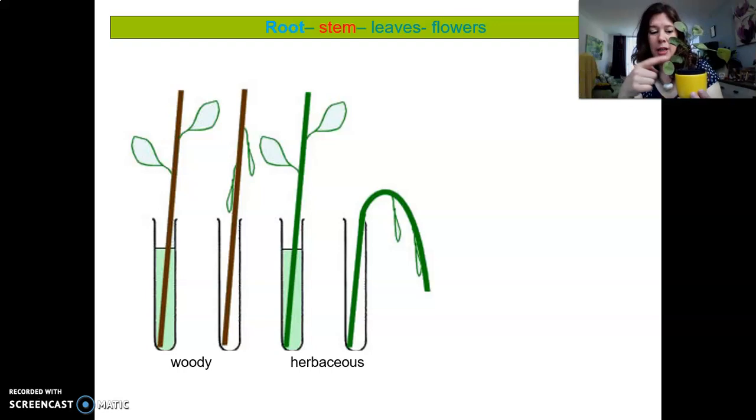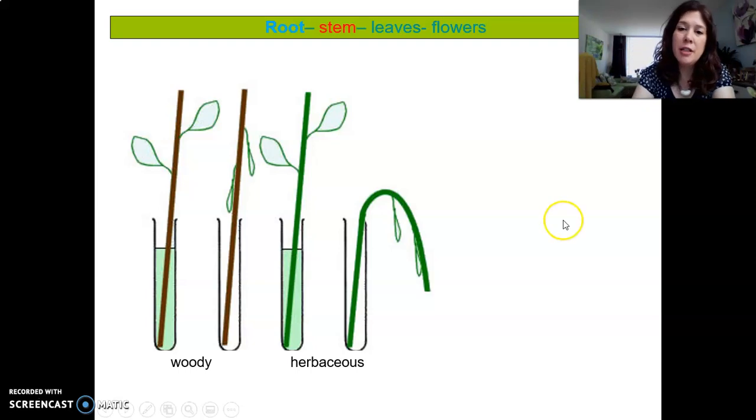Now you probably have sometimes seen tulips in a vase. Maybe you've given your mom or dad some tulips. And then if you don't water the tulips, the leaves, the plant, the whole plant, not just the leaves, but the whole plant will start to hang. And that's because there's no wood in the stem.